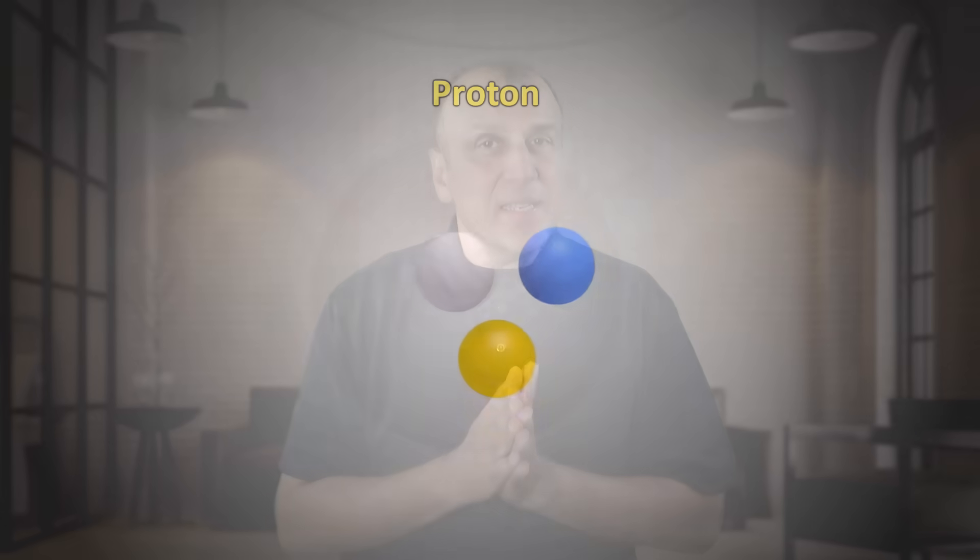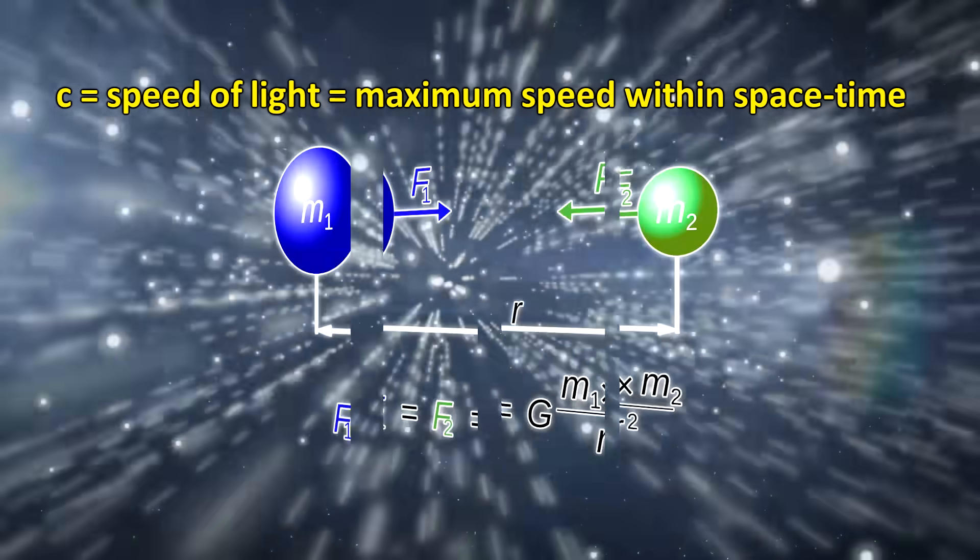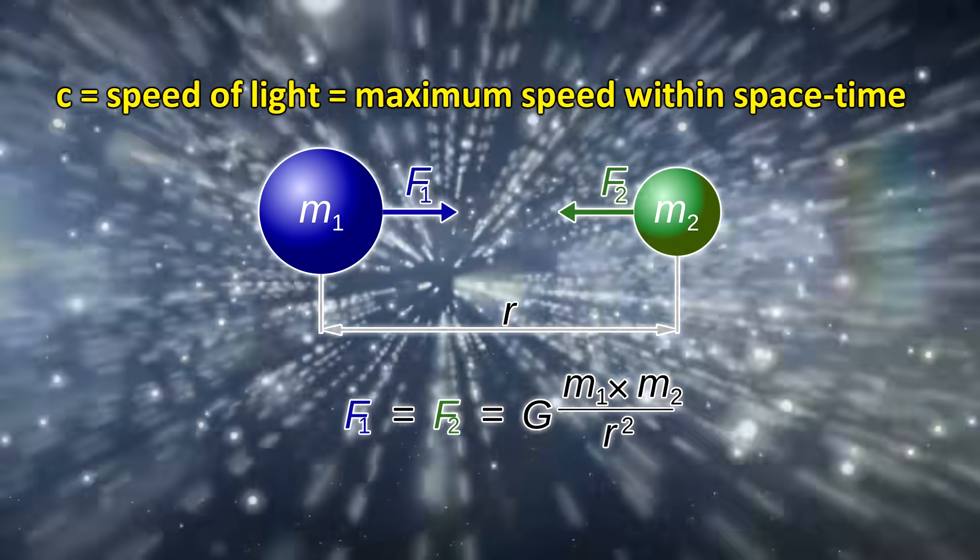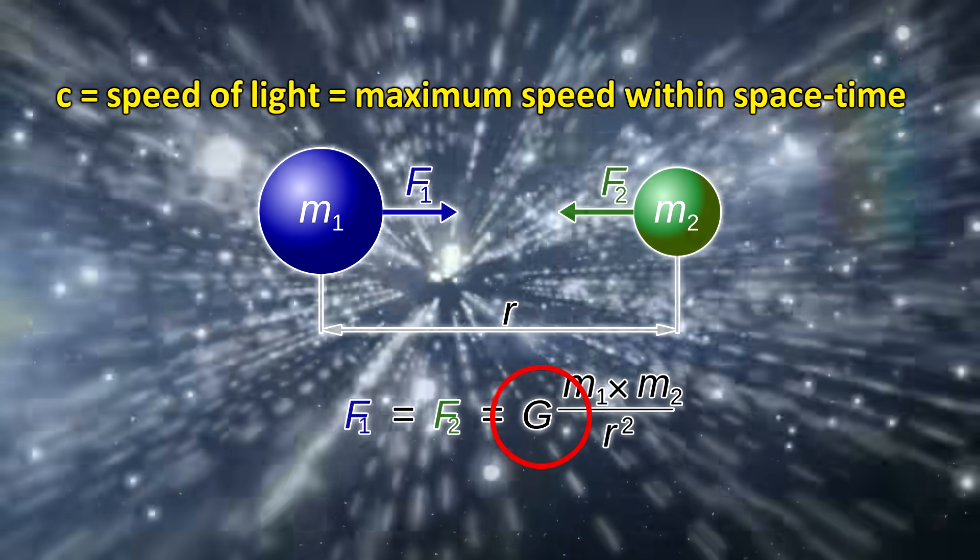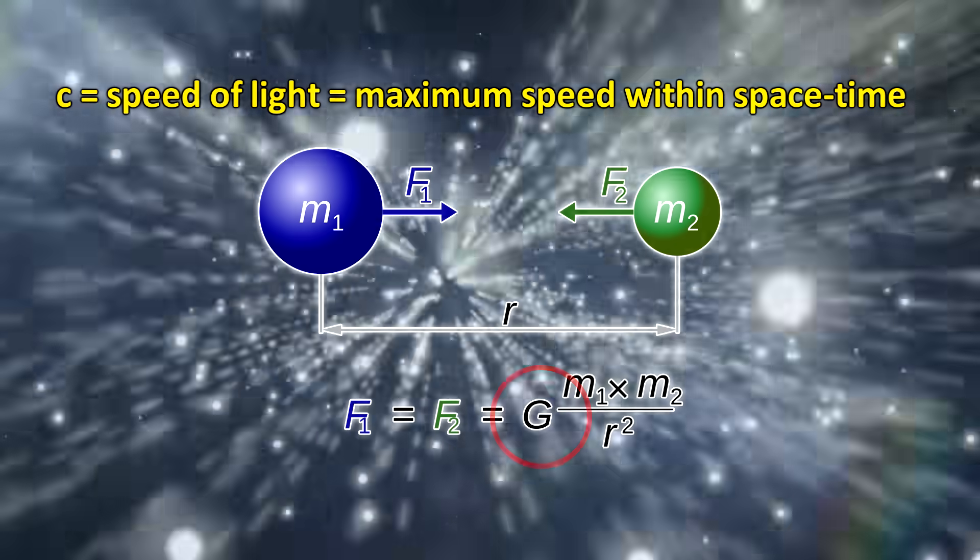But what exactly is a Planck length? And why is it the smallest length? Planck length is actually derived from three fundamental constants of the universe that define the properties of space-time. The speed of light c, which signifies the maximum speed of communication in the universe. The gravitational constant G, which signifies the magnitude of gravitational force between two massive objects.